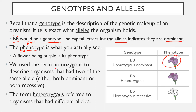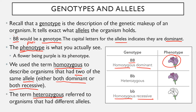We also use the term homozygous to describe organisms that have two of the same allele — it could be either both dominant or both recessive. Capital B, capital B is homozygous dominant. Lowercase b, lowercase b is homozygous recessive. The term heterozygous refers to organisms that have different alleles — capital B and lowercase b, for example — that's heterozygous because they're different.